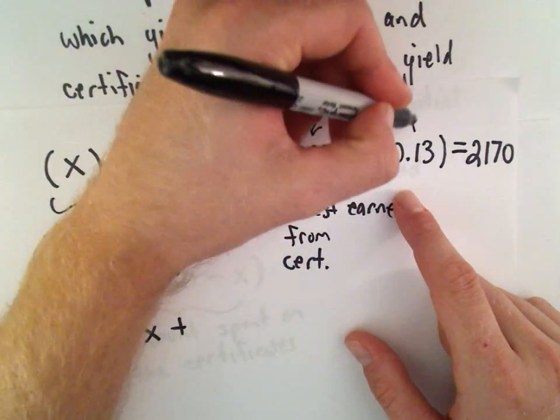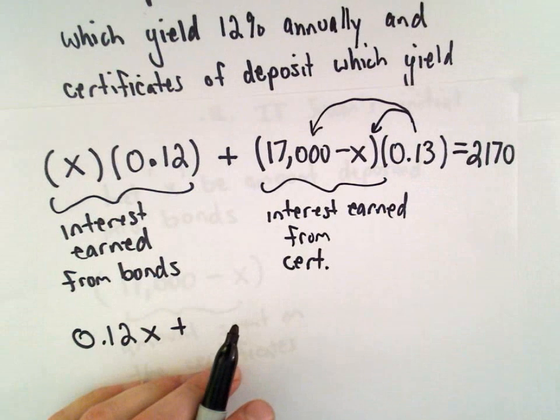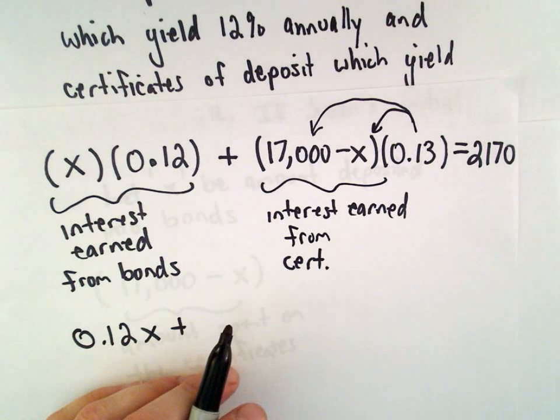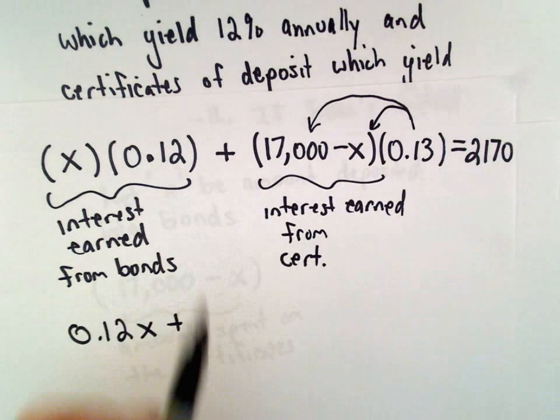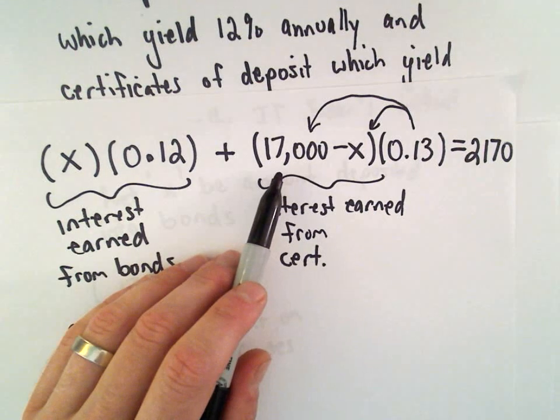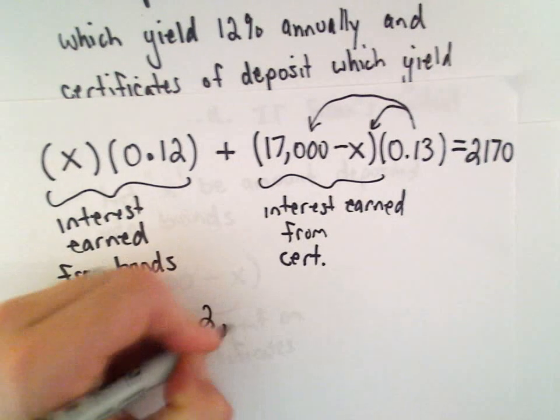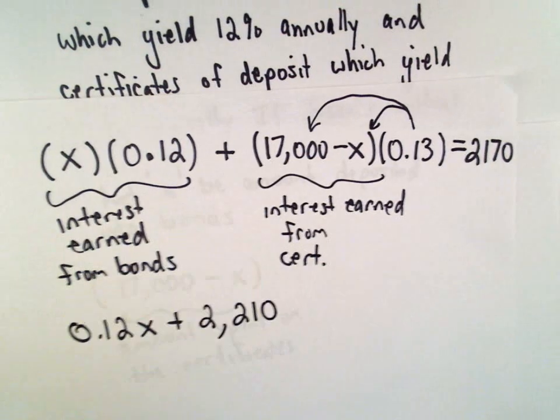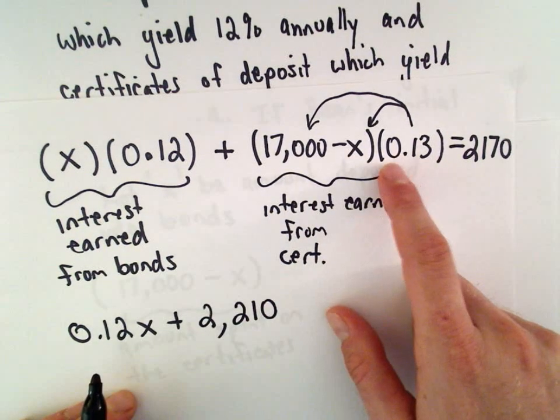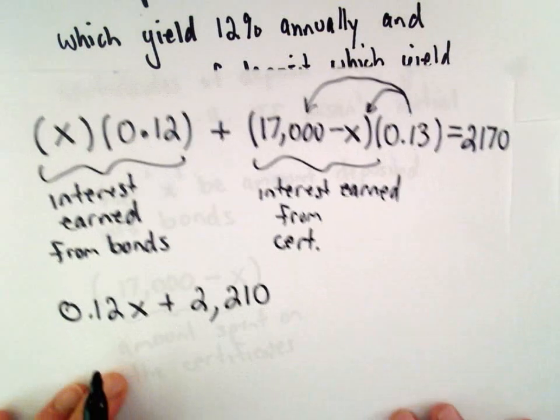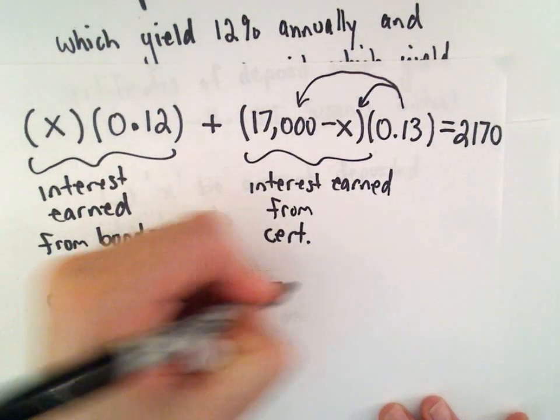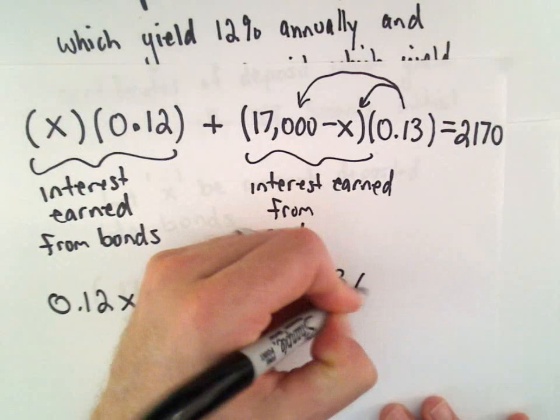0.13, if we multiply that by 17,000, I'm getting this to be 2,210. And then we would have to multiply 0.13 times negative X. That would leave us with negative 0.13X.